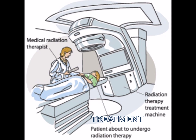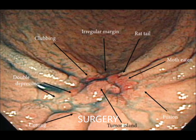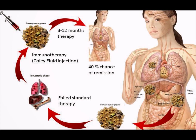The main treatments available nowadays are radiation — here we see how radiation is done by a medical radiation therapist, with some radioactive materials used. Surgery is another treatment option. Immunotherapy is also available, where a 3 to 12 month therapy gives a 40% chance of remission.